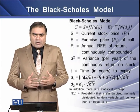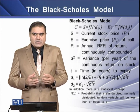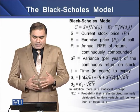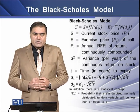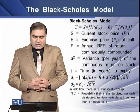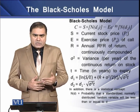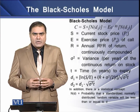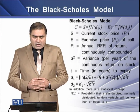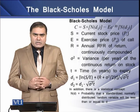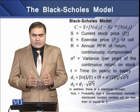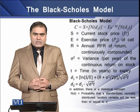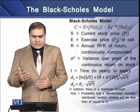In the BS model there are certain variables in the quantitative formulation. S stands for the current stock price, E is the exercise price of the call, R is the annual risk-free rate that is continuously compounding, sigma squared is the variance per year in the return of the stock, and T is the time in years to expiry.